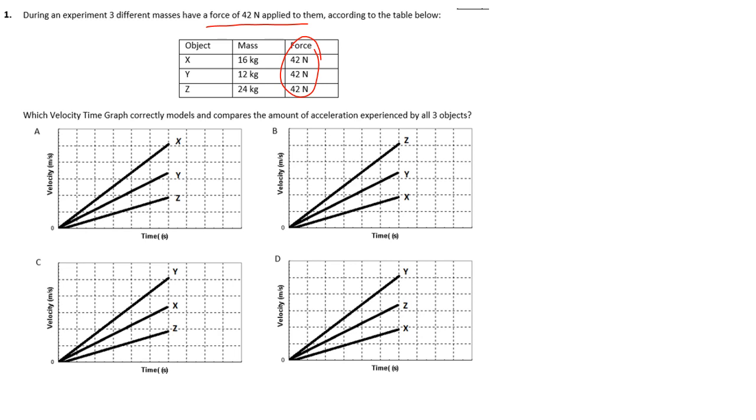Reiterating that the force of 42 newtons has been applied to all of them, so you can probably start thinking about different masses and accelerations because of those forces. We're going to need to make a few connections. The problem reads which velocity time graph correctly models the phasing mass of acceleration experienced by all the objects.